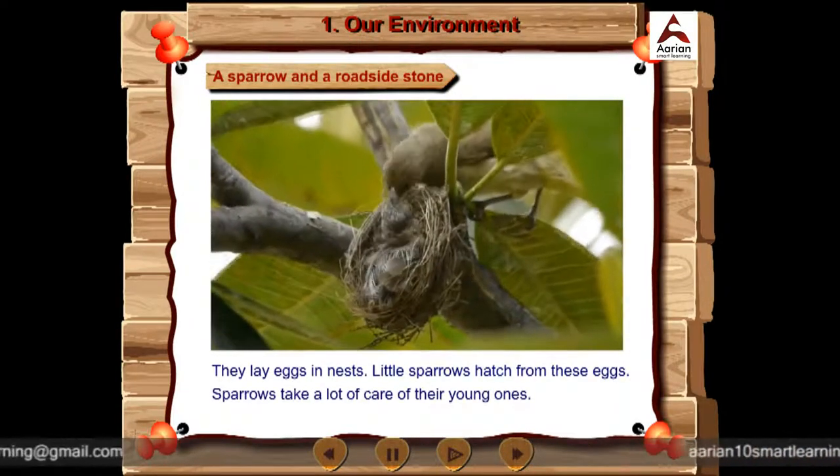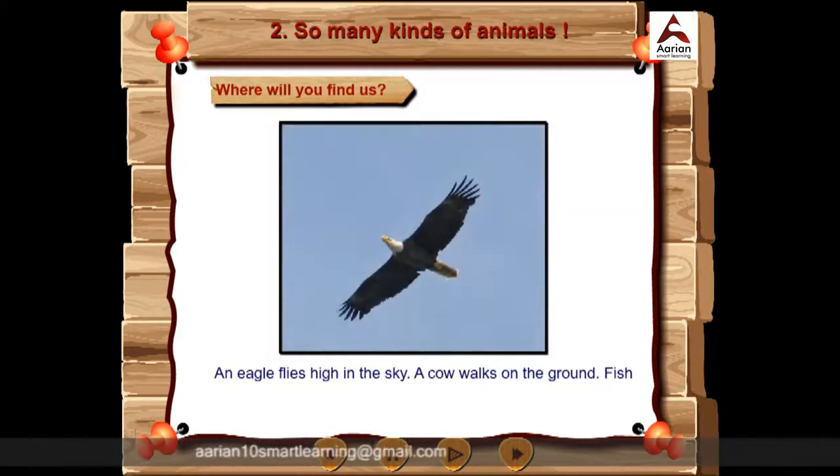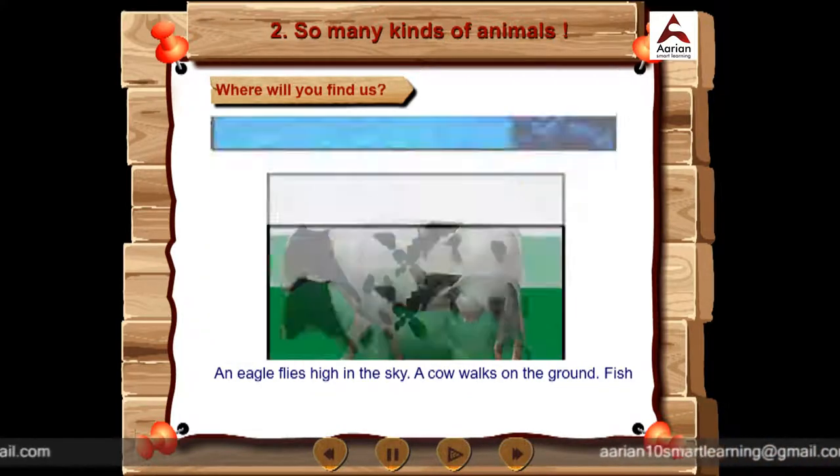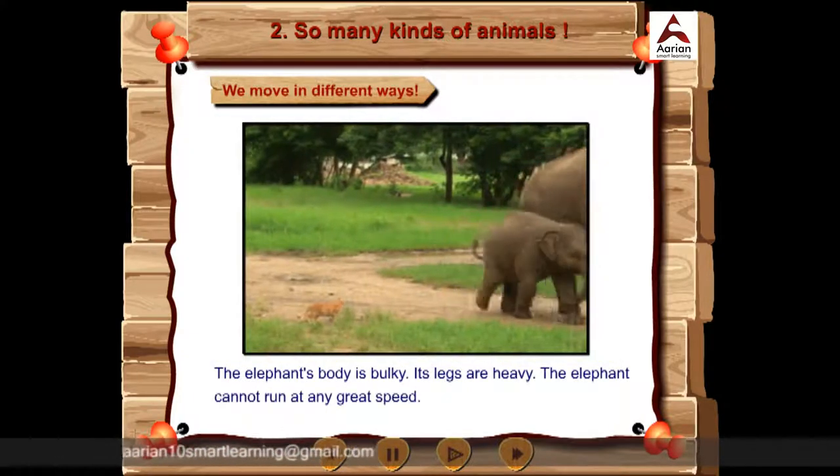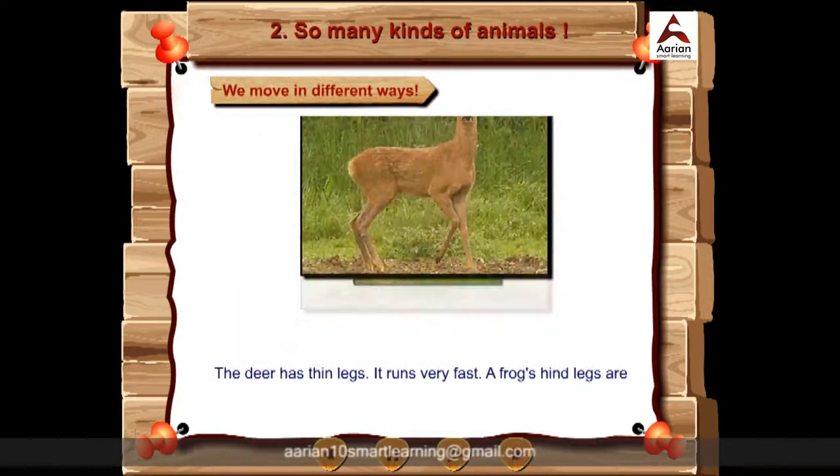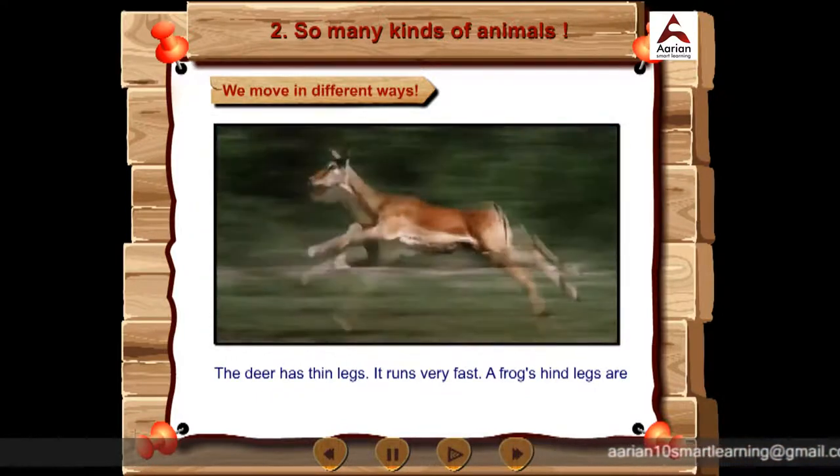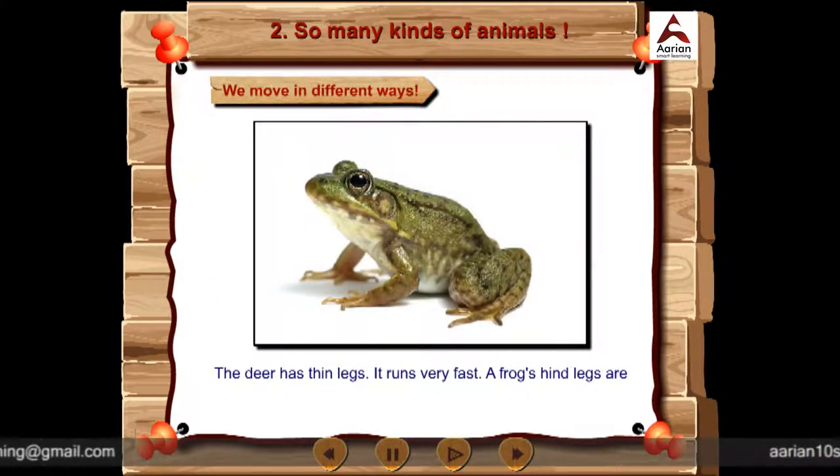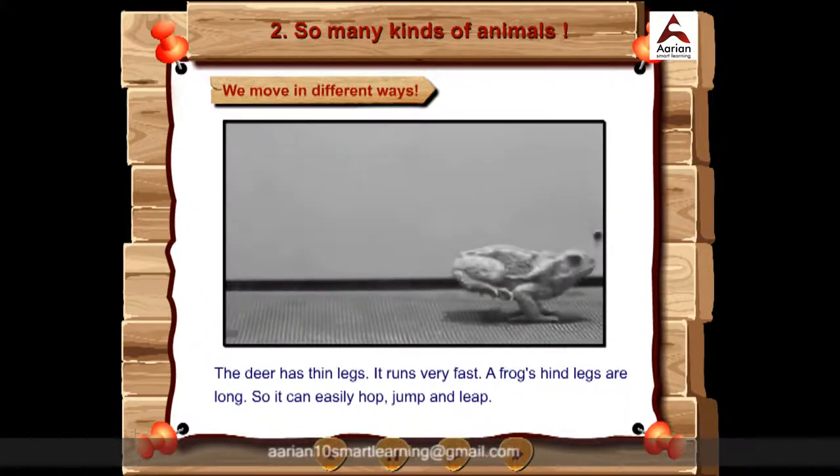Sparrows take a lot of care of their young ones. An eagle flies high in the sky. A cow walks on the ground. Fish swims in water. The elephant cannot run at any great speed. The deer has thin legs. It runs very fast. A frog's hind legs are long, so it can easily hop, jump and leap.